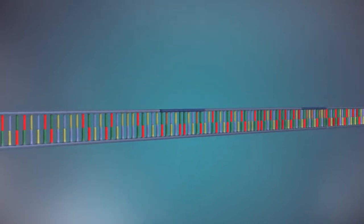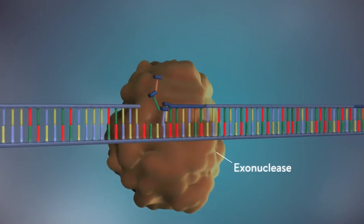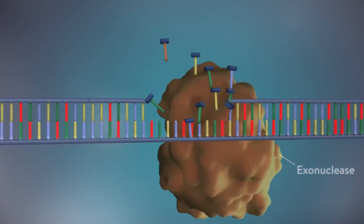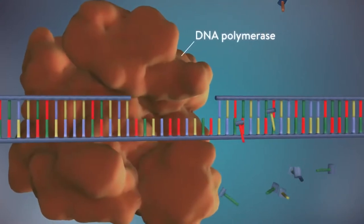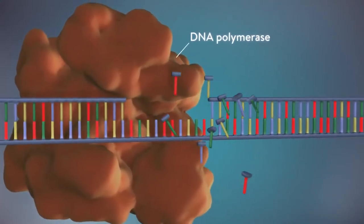Once the new DNA has been made, the enzyme exonuclease removes all the RNA primers from both strands of DNA. Another DNA polymerase enzyme then fills in the gaps that are left behind with DNA.